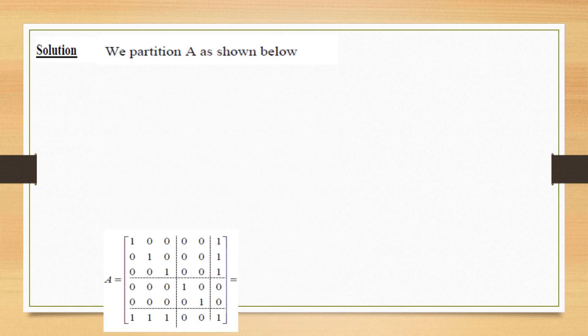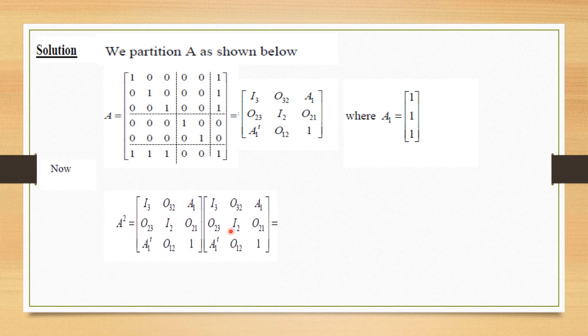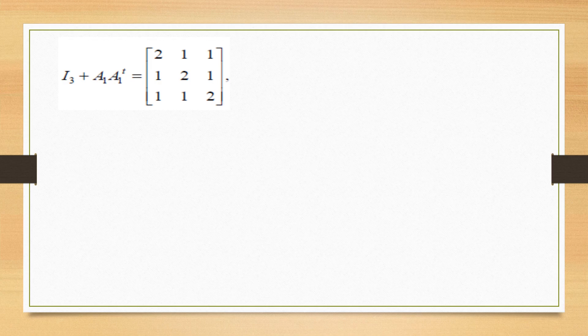We partition A as shown. When we multiply this given matrix to this matrix, we obtain these entries and these entries can be evaluated as shown.